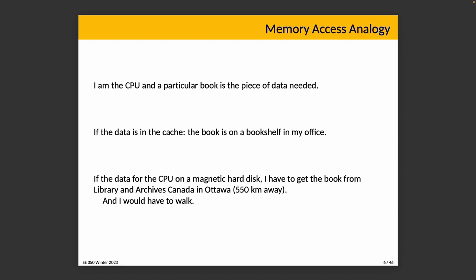To give you an idea of the difference in time: imagine a particular book is a piece of data needed by the CPU. If the data is in cache, it's as if the book is on a bookshelf in my office — I can retrieve it fairly quickly, just stand up, grab it, and have it in my hand. If the data is on a magnetic hard drive, it's as if I have to get the book from Library and Archives Canada in Ottawa — about 550 kilometers away from the University of Waterloo — and I would have to walk.